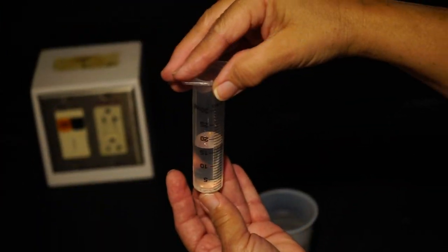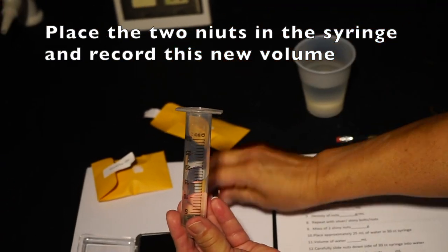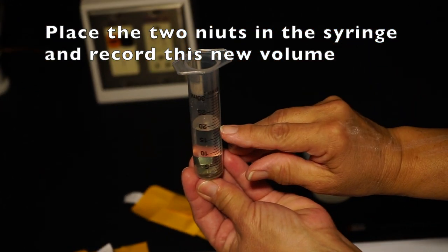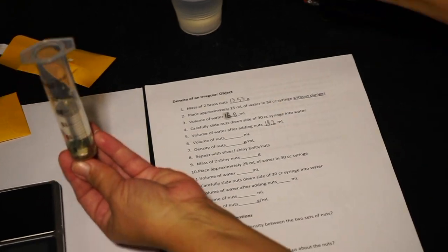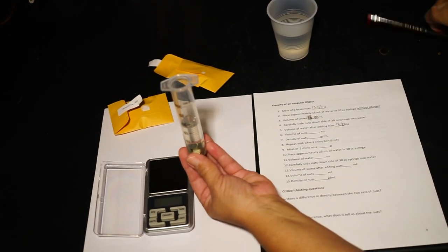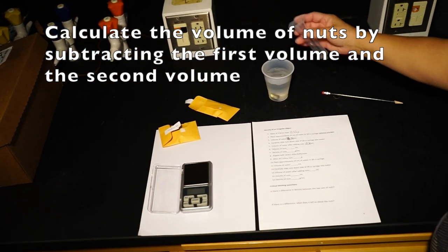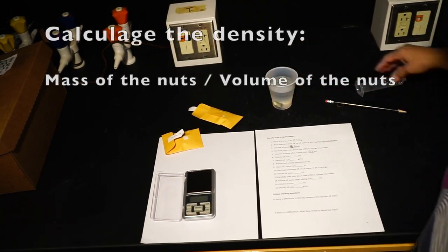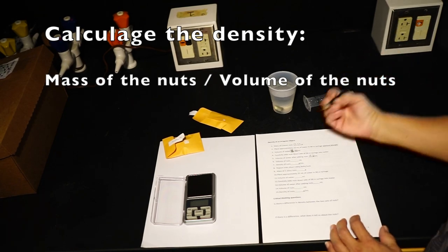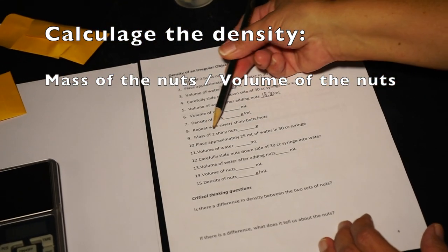Once you're confident in your measuring abilities, record the amount of water in your syringe. Then place two nuts in the syringe and record this new volume exactly. Determine the volume of the nuts by subtracting the first volume measurement from the second. You can then calculate the density of the nuts by dividing the mass of the nuts by the volume you just calculated.